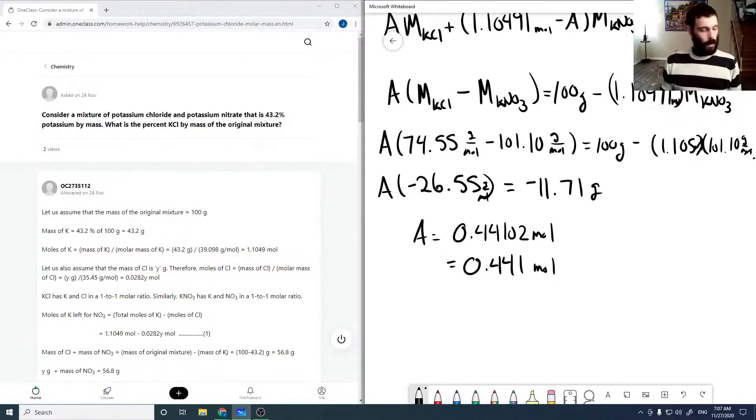So now, if that's our molar amount, that's also—that's our molar amount of A, which is the molar amount of KCl. So that means our mass of KCl is just our molar mass, so 74.5513 grams per mole times our number of moles, which is 0.44102.